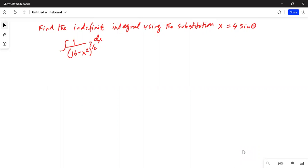Find the indefinite integral using the substitution x equal to 4 sin theta. The integral that we have to find is integration of 1 divided by 16 minus x square to the power 3 by 2, dx.